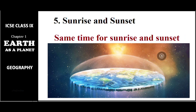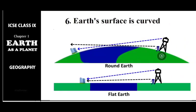Another proof is sunrise and sunset. If the earth were flat, the time for sunset and sunrise would be the same everywhere. But in the present condition, different places at different parts of the world experience sunset and sunrise at different times, and that is because of the spherical shape of the earth.